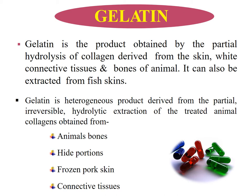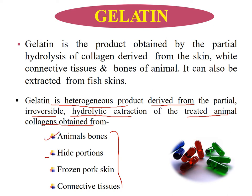What is gelatin actually? Gelatin is a heterogeneous product which is derived from partial, irreversible, and hydrolytic extraction of animal collagen, obtained from various sources. These sources include animal bones, hide portions, frozen pork skin, and connective tissues. These are the sources of gelatin.